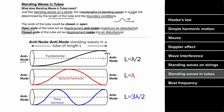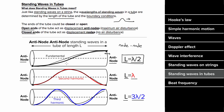If both ends of the tube are open, giving antinode-antinode standing waves, the largest wavelength possibility goes from antinode to antinode, which is one half of a wavelength, so the tube length equals half a wavelength. The next possibility is one whole wavelength, and the next is three halves. Whether both ends are antinodes or both are nodes, you get the same progression: one half wavelength, one whole wavelength, three halves, and so on — any integer or half-integer multiple of the wavelength.